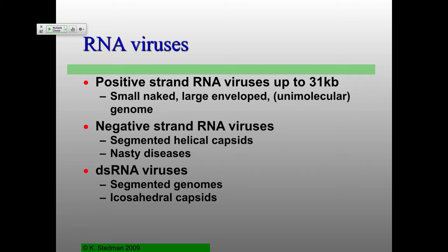Interestingly enough, positive-stranded RNA viruses have the largest RNA genomes, but this is minuscule relative to the largest double-stranded DNA virus genomes — up to about 31,000 bases in length. People think that may have to do with replication. We'll talk much more about these when we talk about coronaviruses later on, because these are the ones with the largest positive-strand single-stranded genomes. You've got some that are big, some that are small, some have envelopes, some don't.